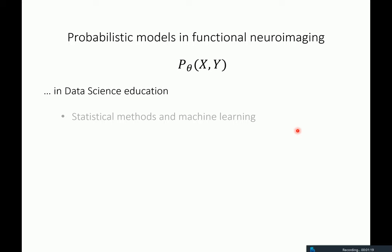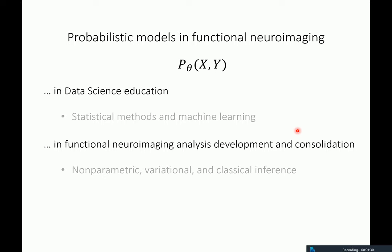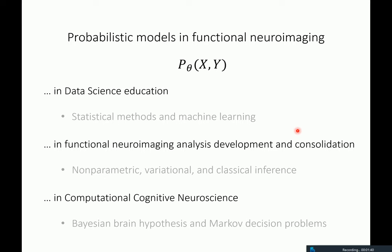First, in data science education — some of my teaching work — where probabilistic models feature prominently in statistical methods and the machine learning teaching that I do. Then they are at the heart of the functional neuroimaging analysis development that I'm working on, where they take the form of non-parametric variational classical inference schemes. And last but not least, in computational cognitive neuroscience, where they take the form of the Bayesian brain hypothesis and Markov decision processes.